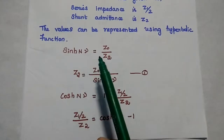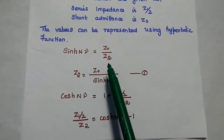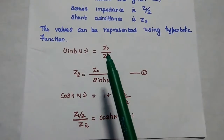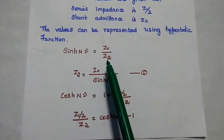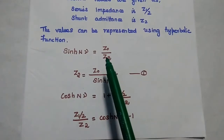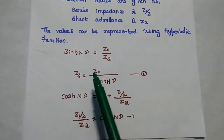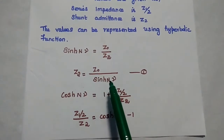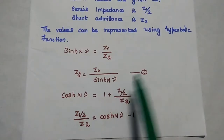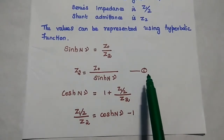sinh(Nγ) is equal to Z0 by Z2. From this we can get the value of the shunt admittance: Z1 by 2 divided by Z2 is equal to Z0 by sinh(Nγ). Consider this as the first equation.